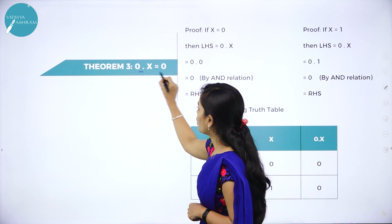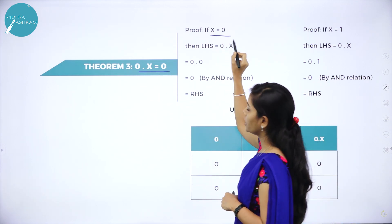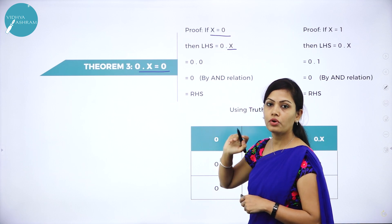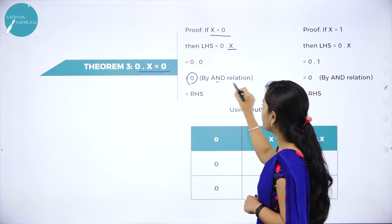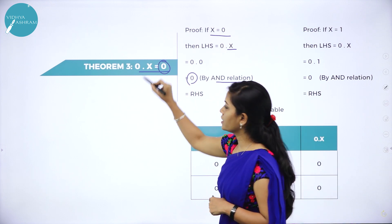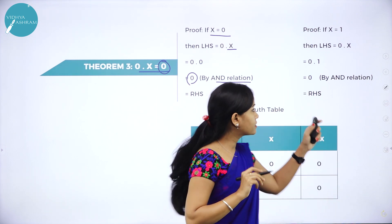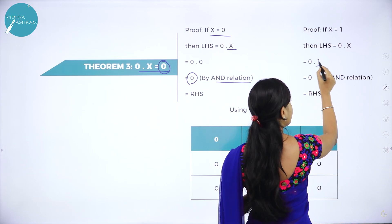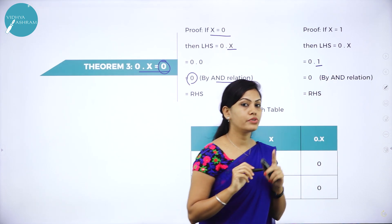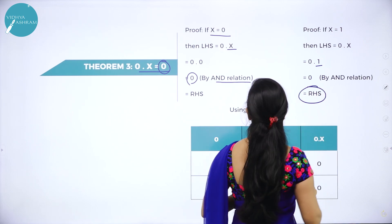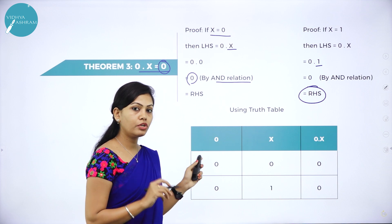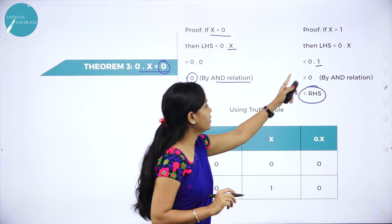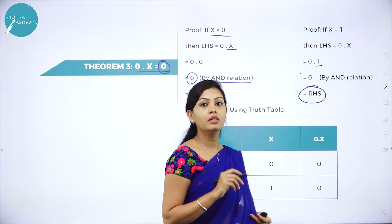Third theorem is 0 dot x is equal to 0. If x is equal to 0, LHS is 0 dot 0, which is 0 by AND relation. We got RHS value 0. If x is equal to 1, substitute into LHS: 0 dot 1 is 0 by AND relation. The truth table for theorem 3: 0 dot 0 equals 0 and 0 dot 1 equals 0. This is your theorem 3.